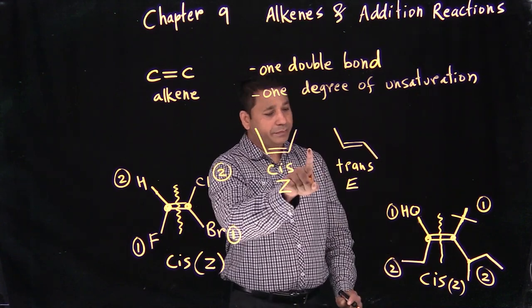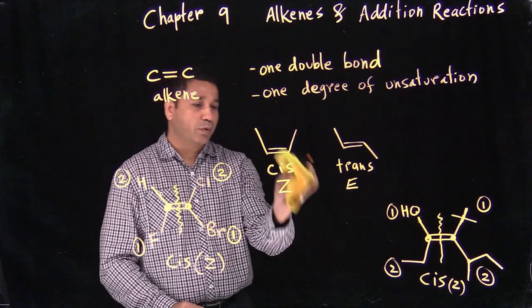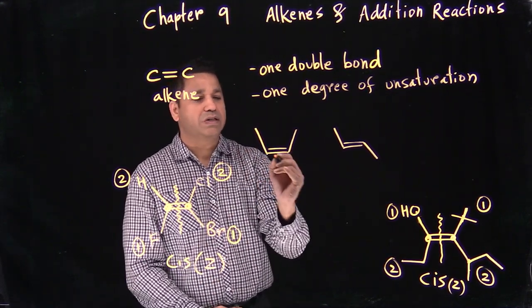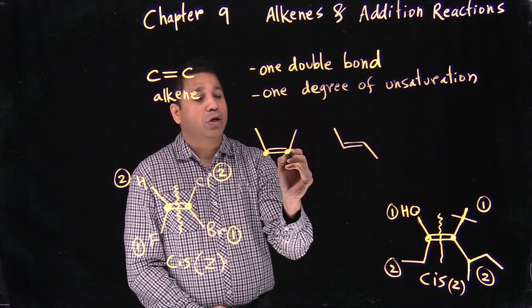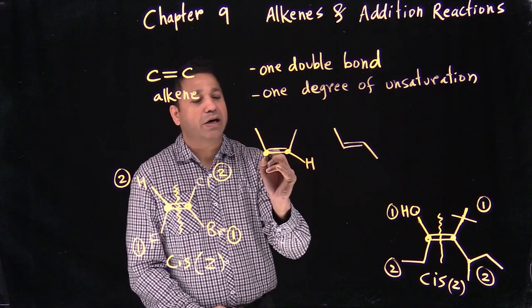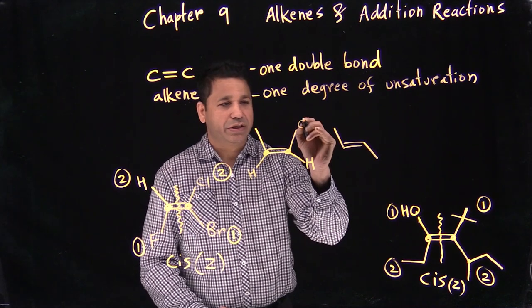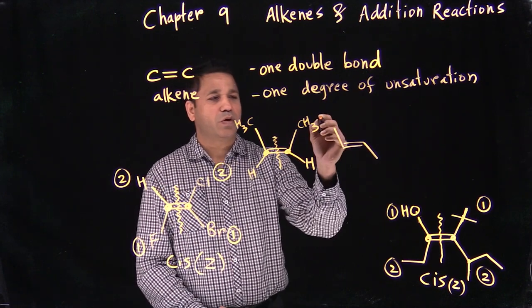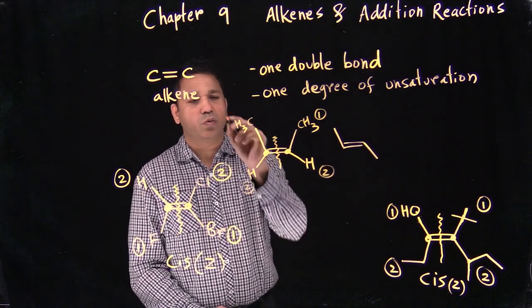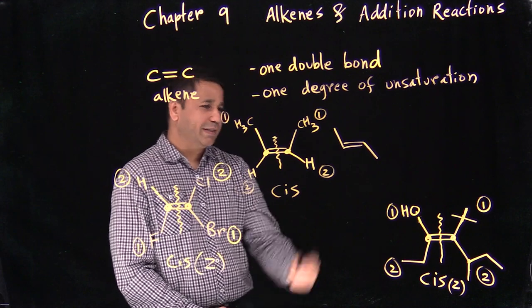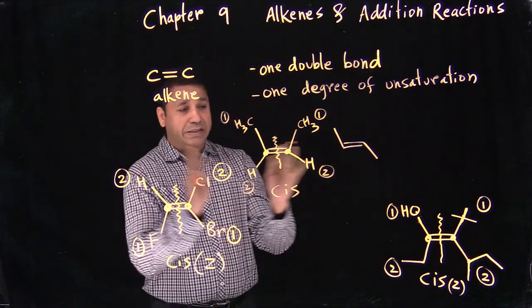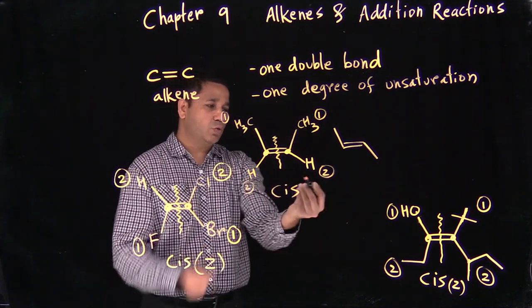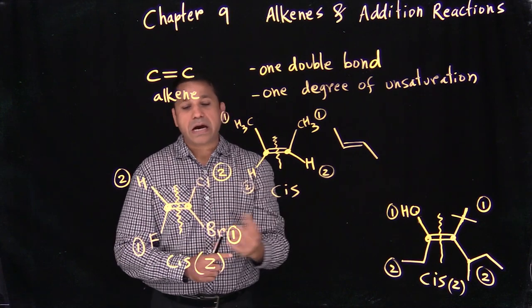Now let's apply the same logic to simpler-looking examples without relying on up-and-down bonds. We assign priorities to each carbon — number one and number two on each side. If one and one face the same side, or two and two face the same side, that's cis. If they're opposite, it's trans. This makes it much easier — just compare the priorities.